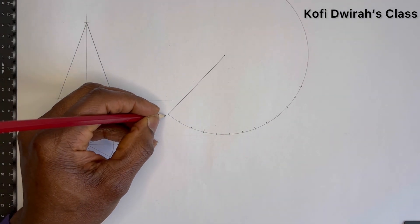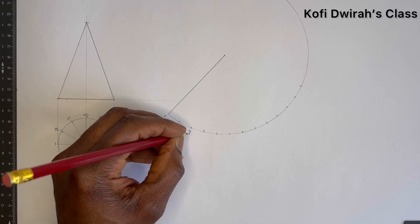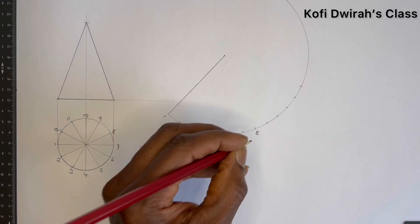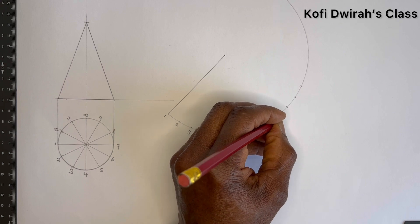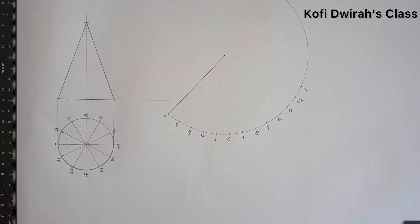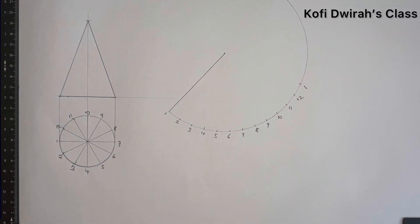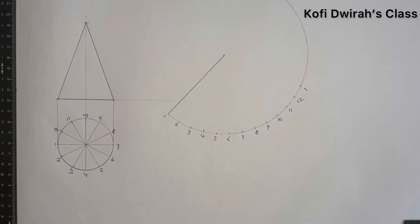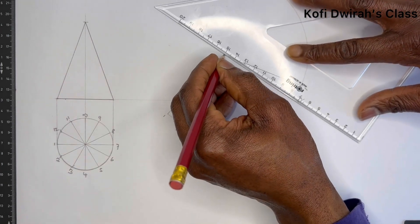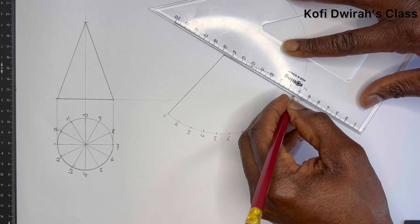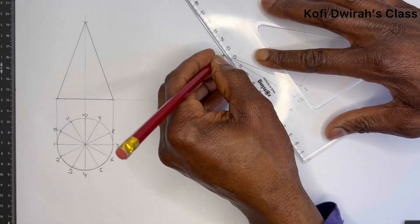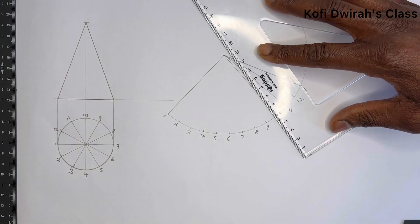Then you number it: one, two, three, four, five, six, seven, eight, nine, ten, eleven, twelve and one again. Then you draw lines from here, from here, from here, and from here.